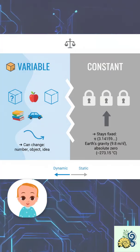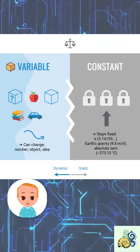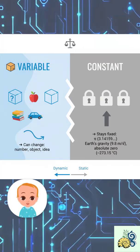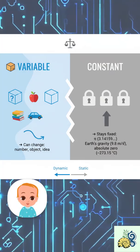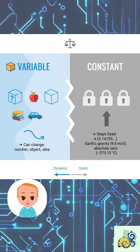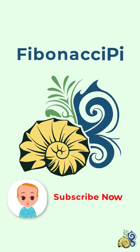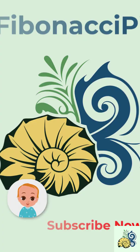So remember: a variable can change, a constant stays fixed. That's it. Now you know the difference between variables and constants — the building blocks of every programmer. Don't forget to like and subscribe for more beginner-friendly coding videos.